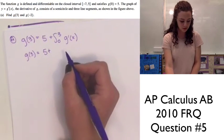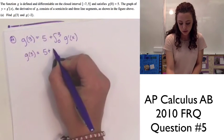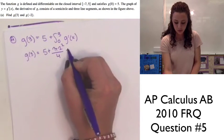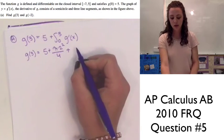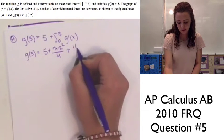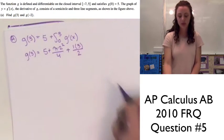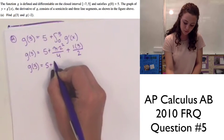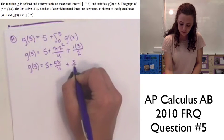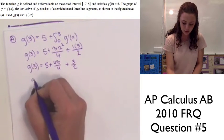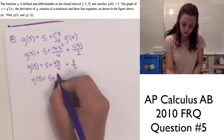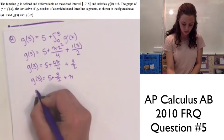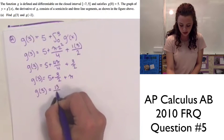The radius of the quarter circle is 2, so its area is pi times 2 squared over 4. Adding the triangle area of 1 times 3 divided by 2, we get g of 3 equals 5 plus 4pi over 4 plus 3 over 2. Simplifying, that gives us g of 3 equals 13 halves plus pi.